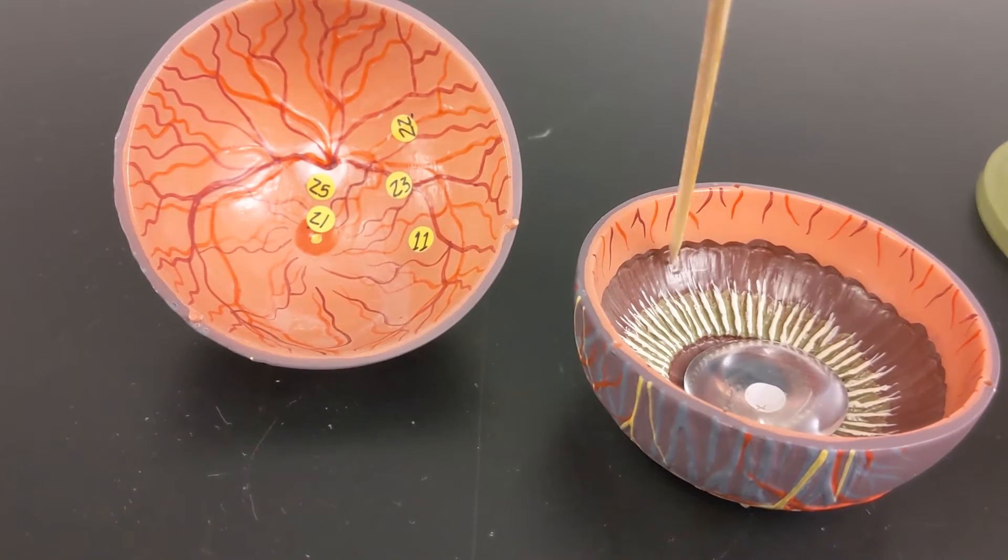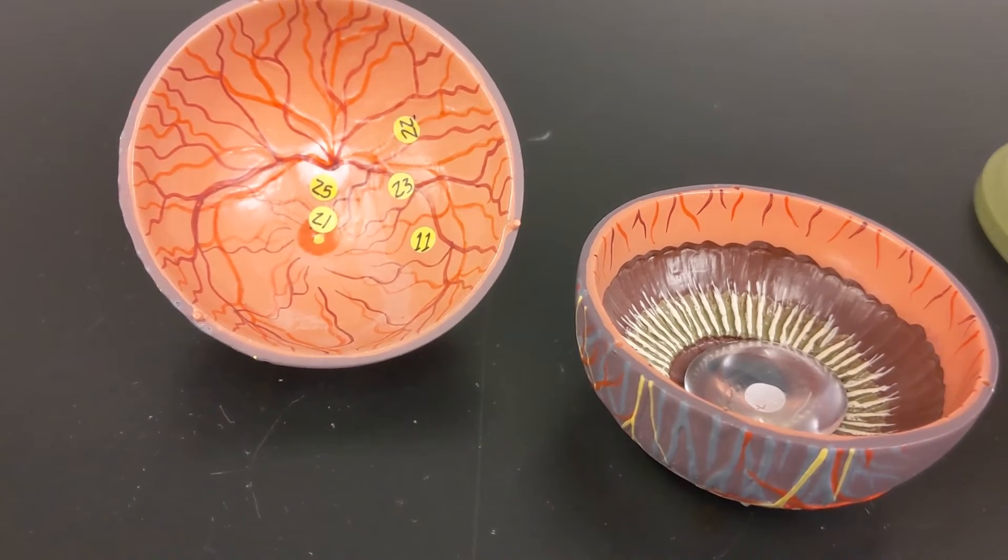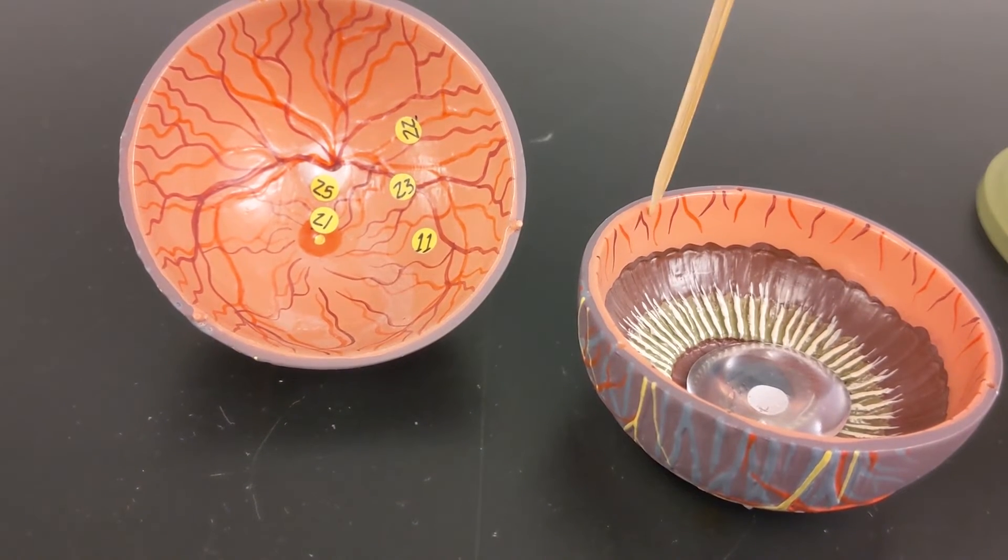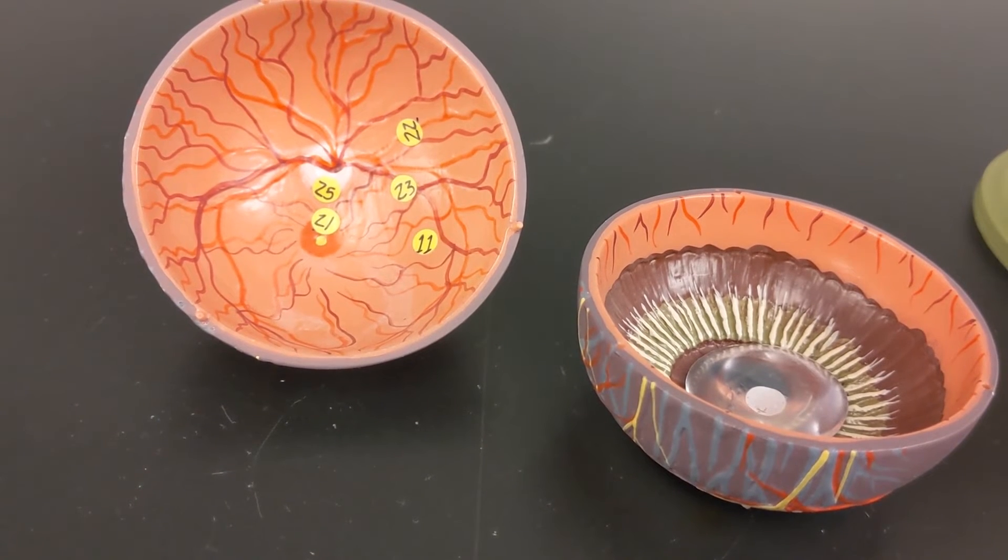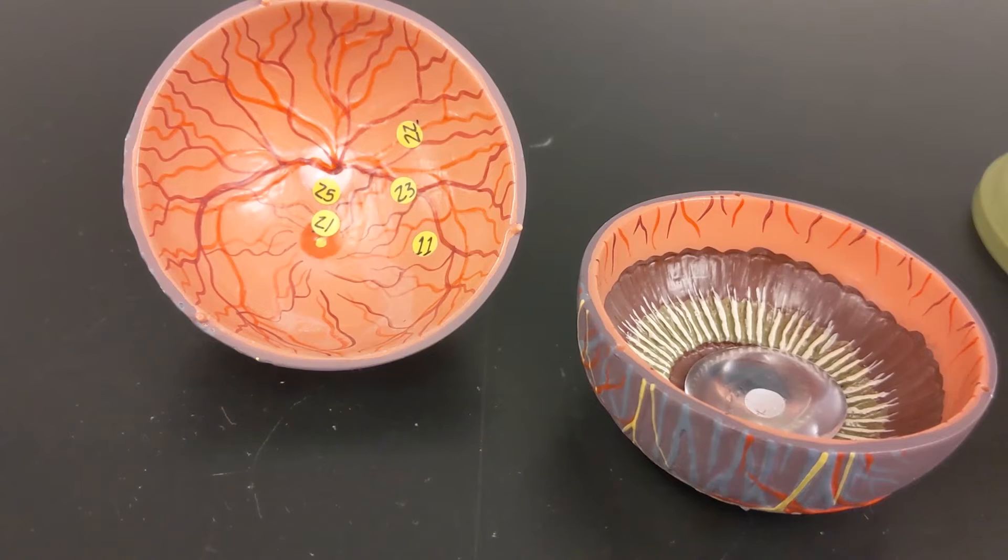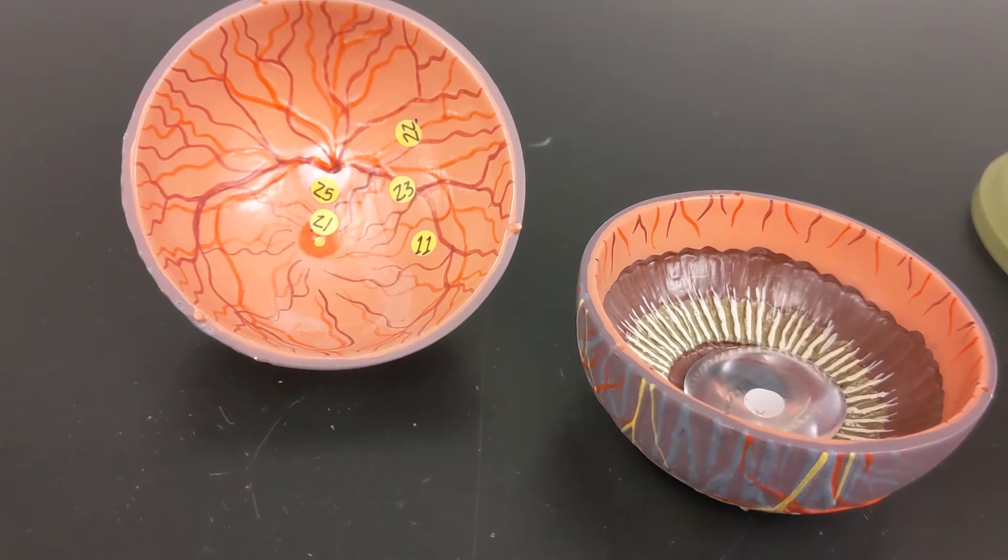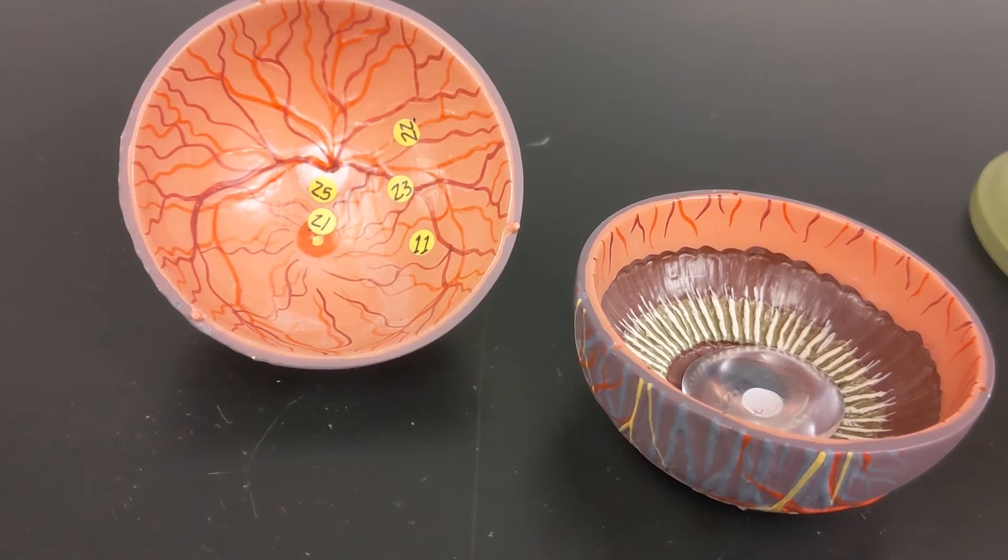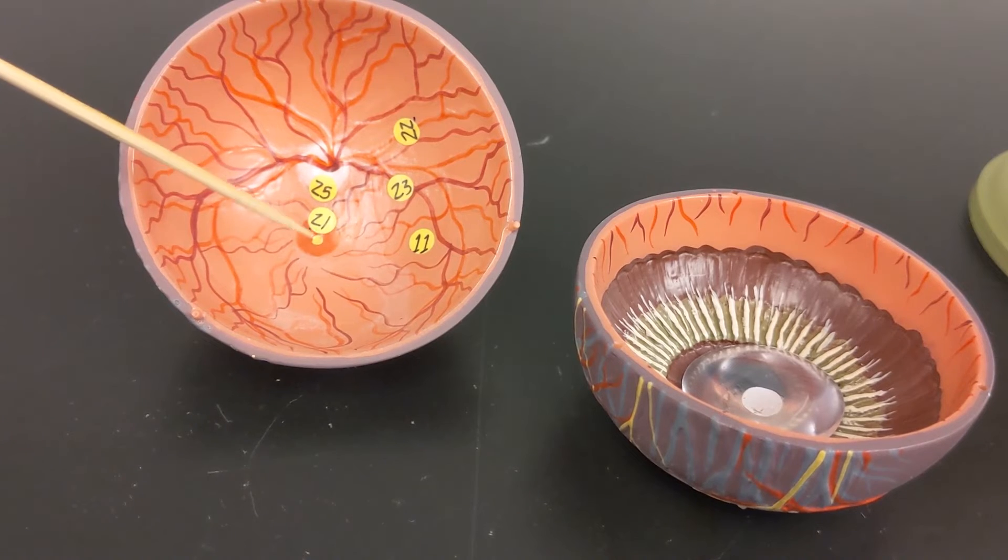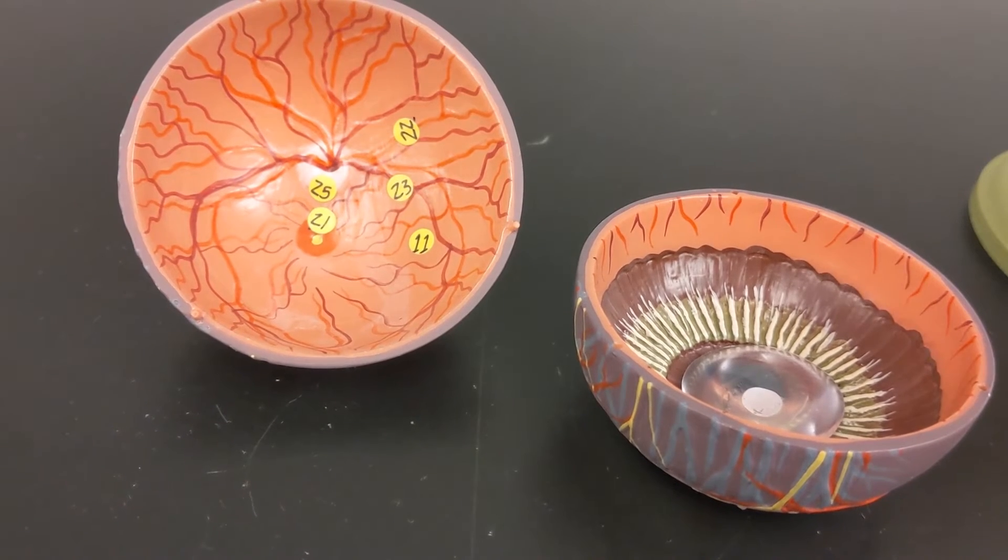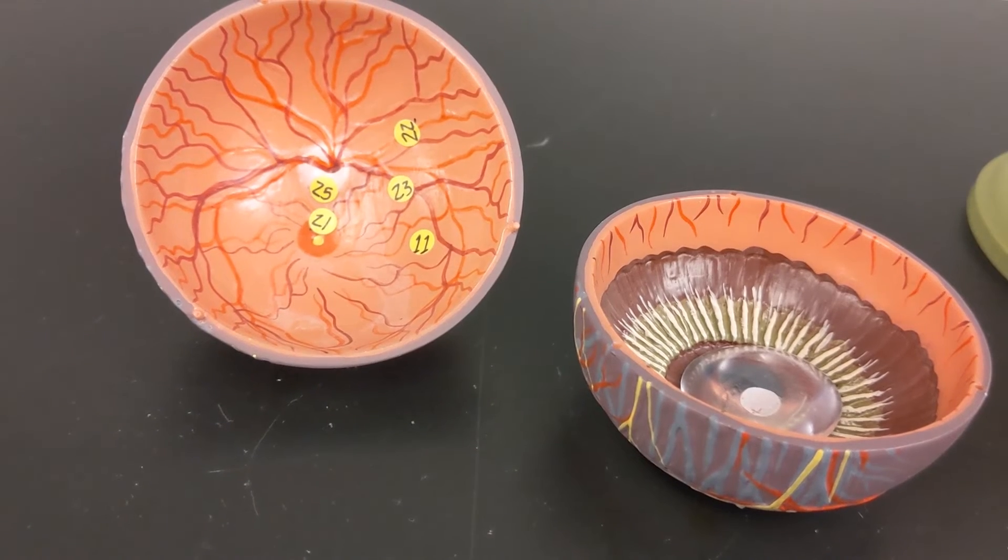So this is the outer pigmented layer of the retina, and this is the inner neural layer. So the outer pigmented layer is underneath the neural layer. And basically it's just a highly pigmented layer that is going to absorb excess light entering your eye so that it's not bouncing around inside your eye and confusing your vision.